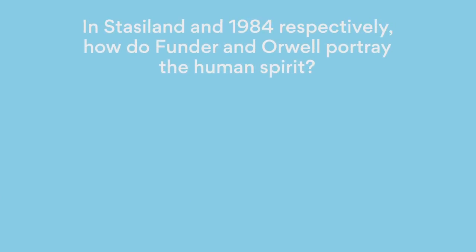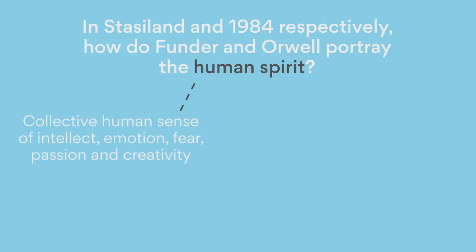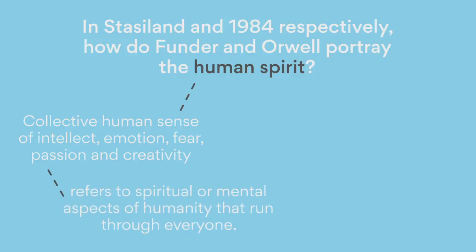Today's prompt is the following question: in Stasieland and 1984, respectively, how do Funda and Orwell portray the human spirit? You may notice here that since the topic is just a straightforward question, there are not many words to define here. The human spirit is pretty much the only term that may need defining. It means the collective human sense of intellect, emotion, fear, passion, and creativity, and it refers to spiritual or mental aspects of humanity that run through everyone. The word that's actually supposed to prompt your thinking process is the word 'portray.'